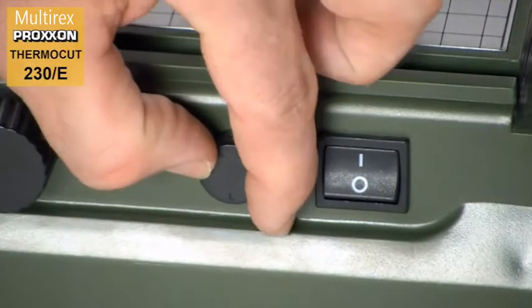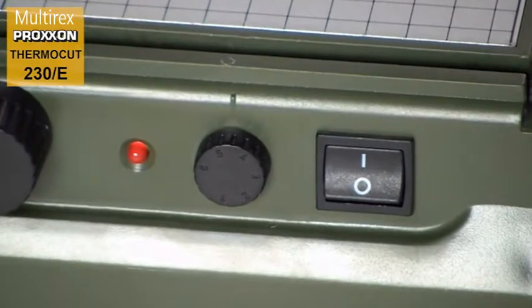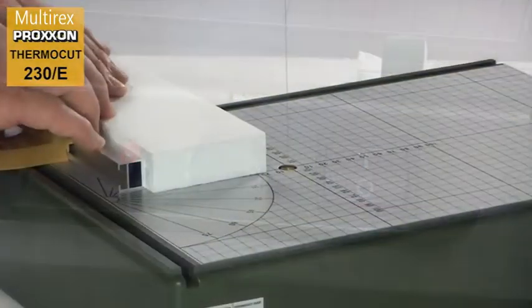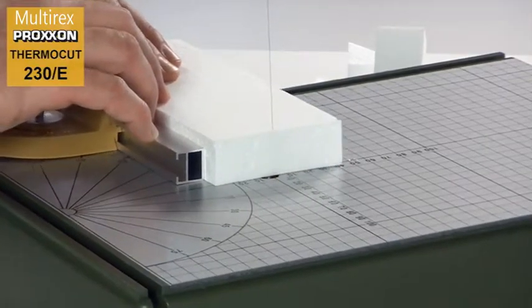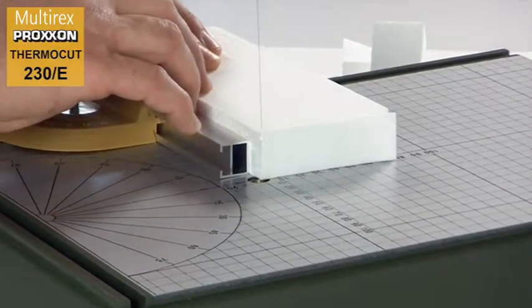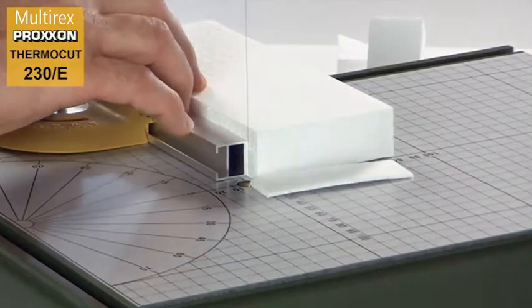The wire temperature can be controlled within the range from 100 to 200 degrees Celsius, meaning you can rapidly find the temperature best suited to each material and thickness, and the workpiece can then be cut with the application of moderate pressure.